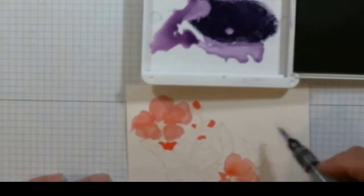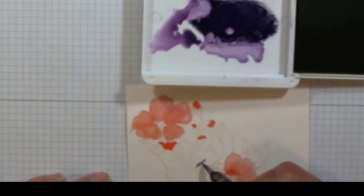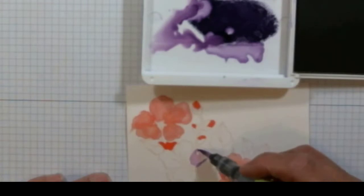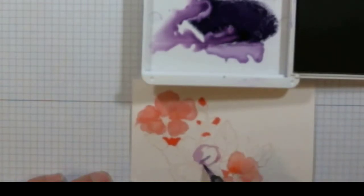Again, I'm going to do the exact same thing I did before. I'm just going to add some water to dilute the ink so that I can have a softer, paler color, and then I'll just keep playing with it until I get what I want.